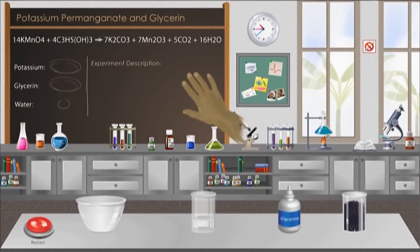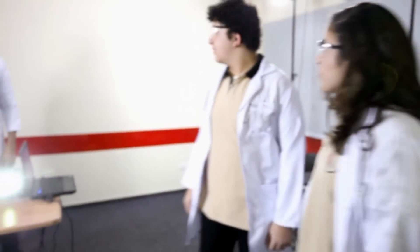What's this? The lab is ready. You have potassium, glycerin, water, a dropper, a spoon, and a bowl. How does it work?